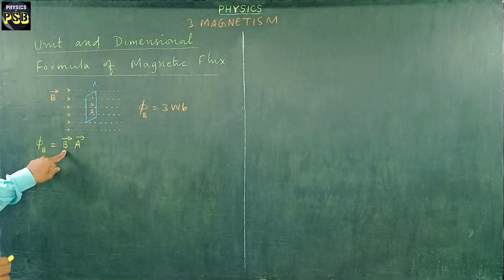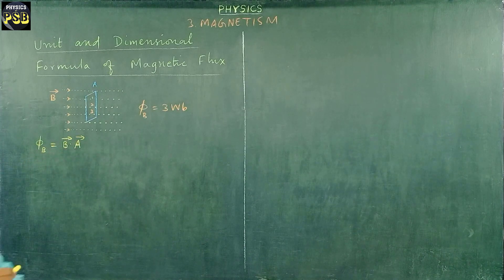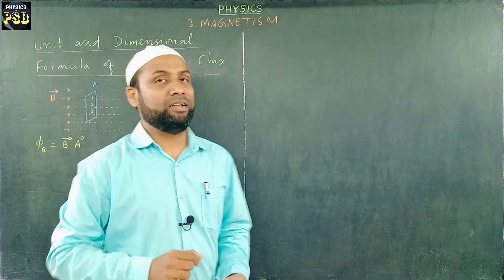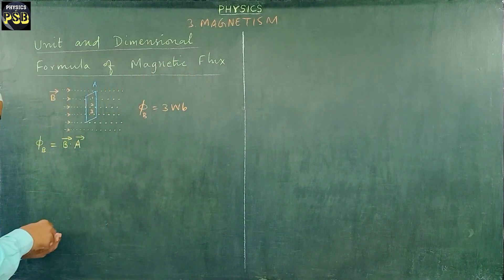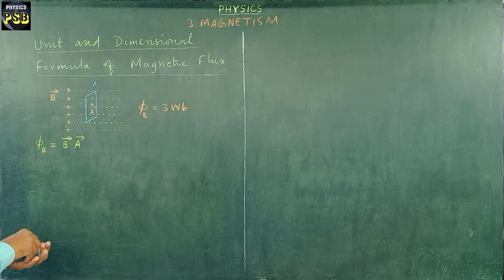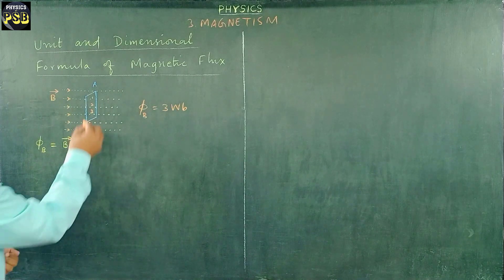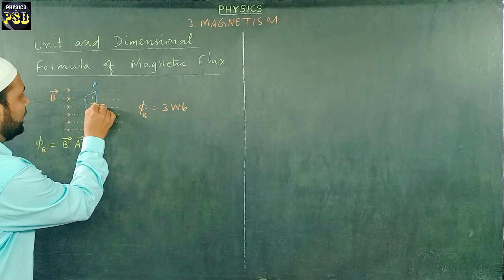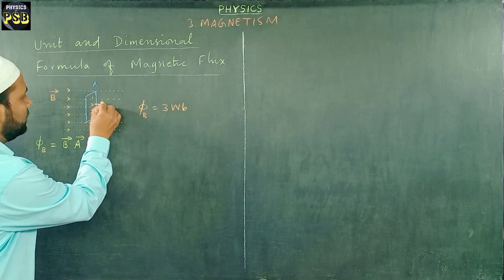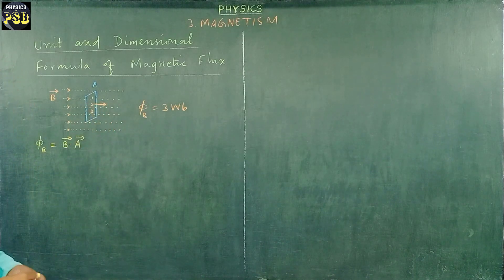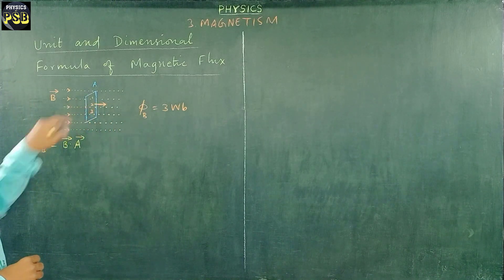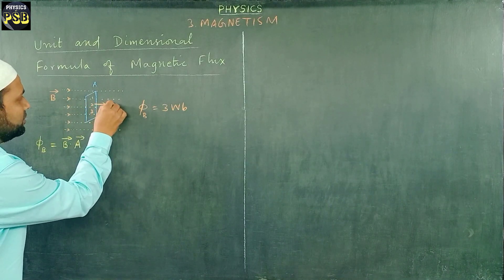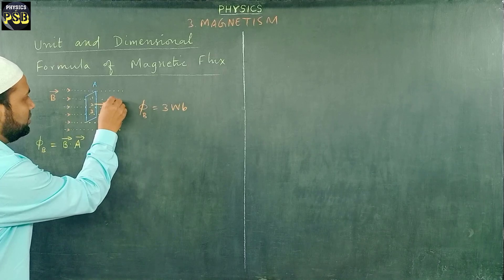Here B is the magnetic field. A stands for area, and A vector is the area vector. This area vector can be obtained if we draw a normal to this surface. This is a normal line — a perpendicular line — which actually provides the area vector A.